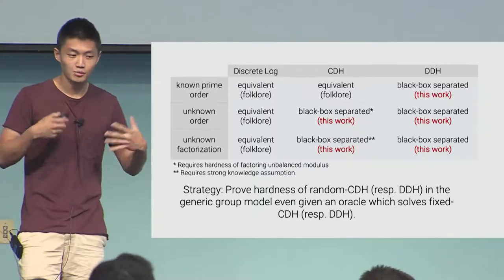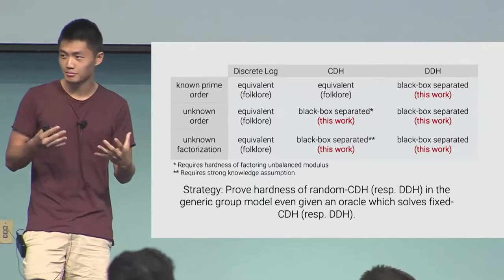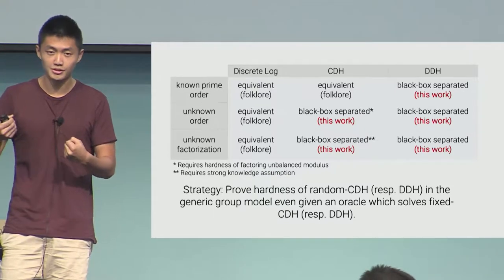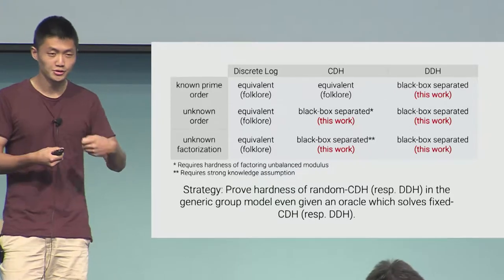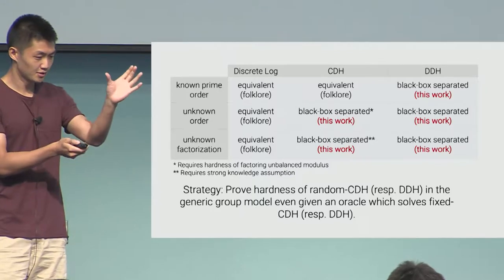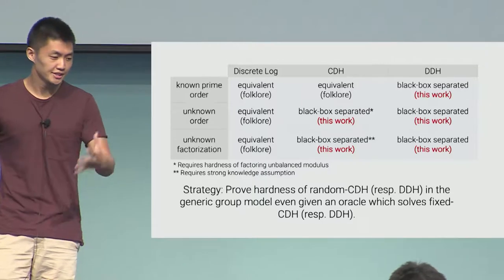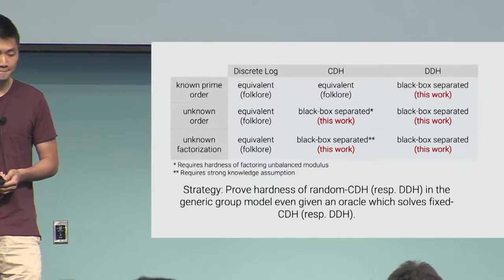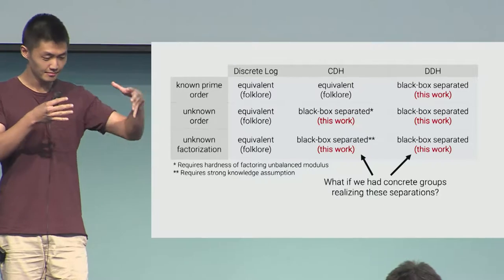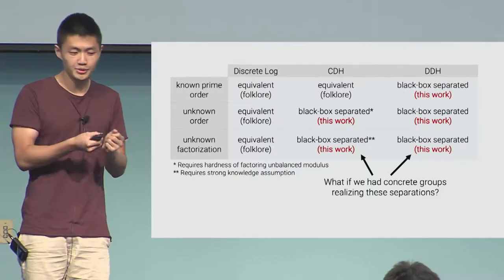This is roughly the state of the art before this work. As a first result — maybe as a form of cryptographic housekeeping — we give black box separations between the fixed and random generator versions in all the remaining boxes where we didn't know equivalences. We're not going to go into detail about how we actually do these separations, but they go through in the way you would expect: basically, you prove that in the generic group model, if you're equipped with an oracle that solves the fixed generator version of your problem, it's still hard for you to solve the random generator version.